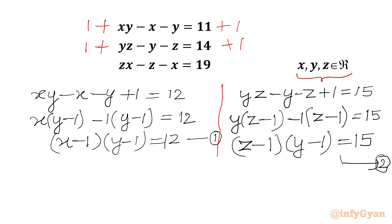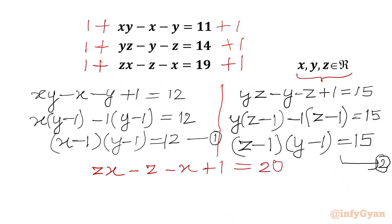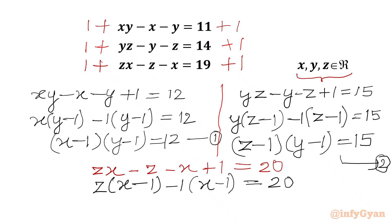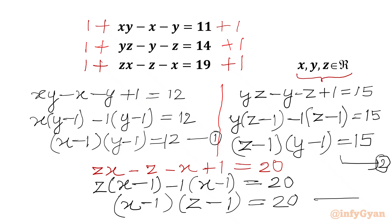Now we will add 1 to the third equation on both sides. Our equation will become ZX minus Z minus X plus 1 equal to 19 plus 1, which is 20. Again we can take Z common from the first two terms, giving X minus 1 in the bracket, and minus 1 common from the last two terms, giving X minus 1 in the bracket. Now X minus 1 is overall common, so we get X minus 1 times Z minus 1 equal to 20. This is our equation number 3.